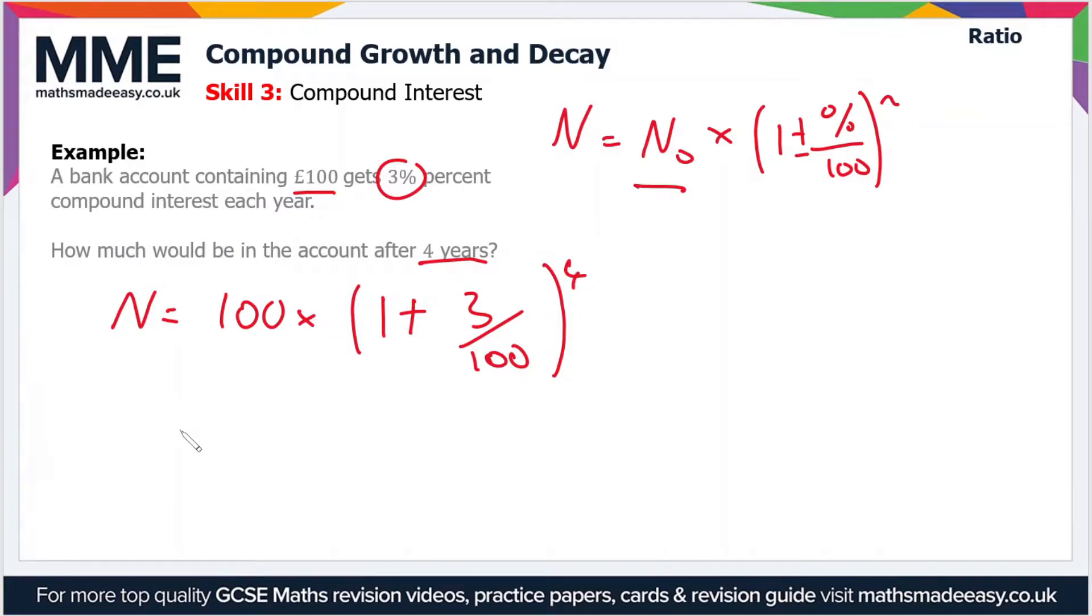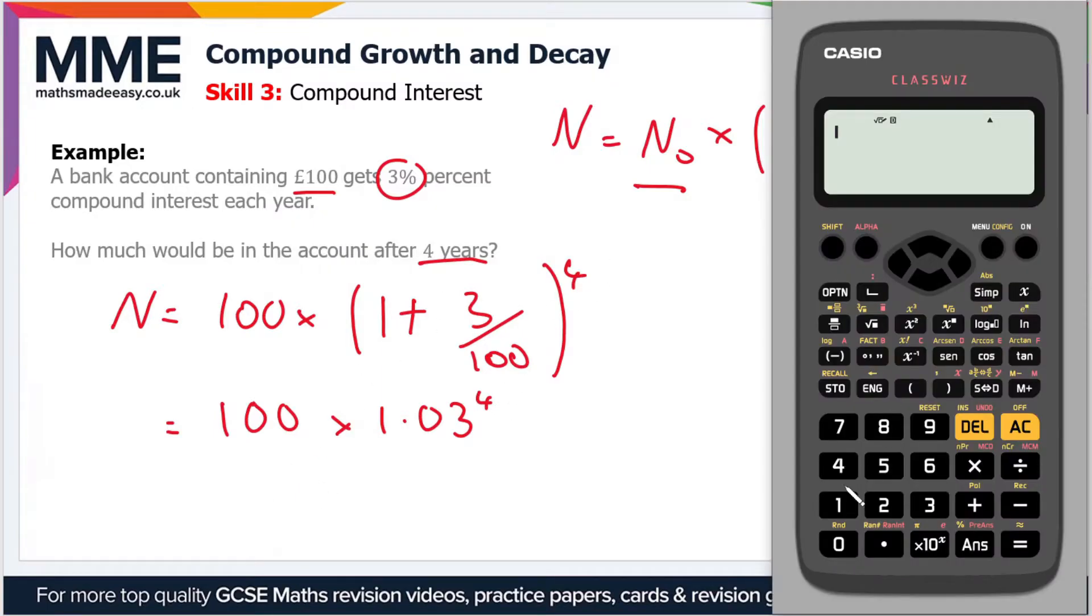Now we can rewrite this a bit more simplified. So 100 times 1 plus 3 divided by 100, or 3 divided by 100 is 0.03, so 1.03 to the power of 4. So let's put that into the calculator. So 100 times 1.03 to the power of 4.